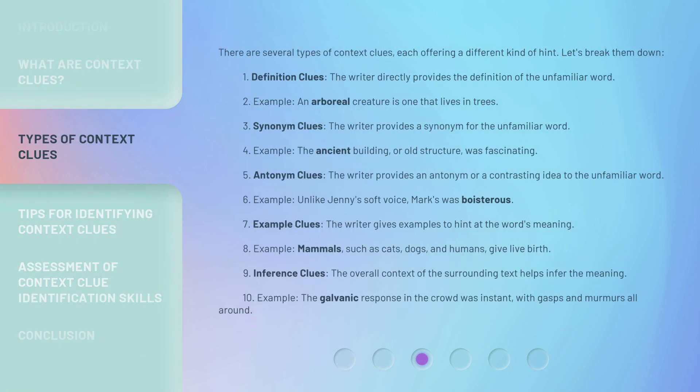There are several types of context clues, each offering a different kind of hint. Let's break them down. 1. Definition Clues: The writer directly provides the definition of the unfamiliar word. Example: An arboreal creature is one that lives in trees. 2. Synonym Clues: The writer provides a synonym for the unfamiliar word. Example: The ancient building, or old structure, was fascinating. 3. Antonym Clues: The writer provides an antonym or a contrasting idea to the unfamiliar word. Example: Unlike Jenny's soft voice, Marx was boisterous.